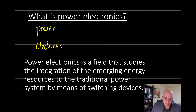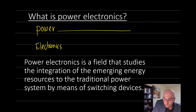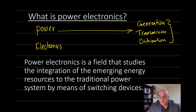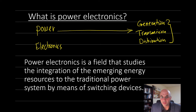So power electronics is a branch of engineering that involves the generation, transmission, and distribution — but we do this using electronics devices, similar to what traditional power systems do. Others also define power electronics as a combination of electrical engineering, electronics, and control theory.